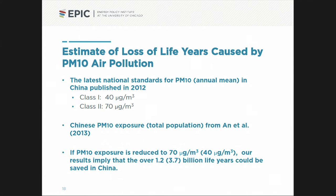Now for back-of-the-envelope calculation: I have an estimate of what an extra 10 micrograms per cubic meter of PM10 does to life expectancy. If China implemented a policy bringing PM10 exposure down not to US standards, but to China's own standards — class two is 70 micrograms per cubic meter, class one is 40 — bringing it down to 70 would increase life expectancy by 1.2 billion life years. Bringing it down to 40 would increase it by about 3.7 billion life years — a substantial health benefit.